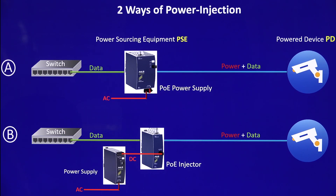The PD — Powered Device — could be something like an IP camera, a Wi-Fi access point, or an access terminal. In the second way, you have an existing DC 48-volt grid available and you can connect the injector directly to this DC grid. If you don't have a DC grid but want to generate one to power other loads such as switches, you can use a Pulse standard power supply.